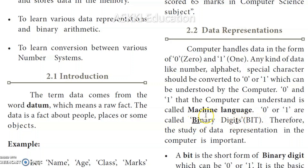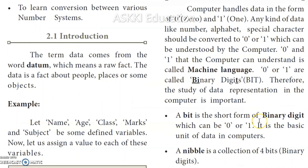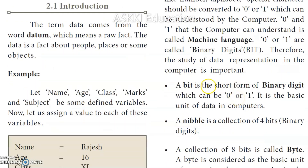These 0s and 1s are stored in the computer. We call them bits — short for binary digits. A bit is the basic unit of data in computers, and its value can be 0 or 1.